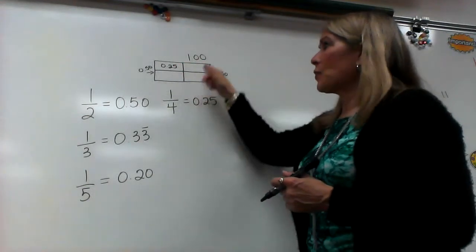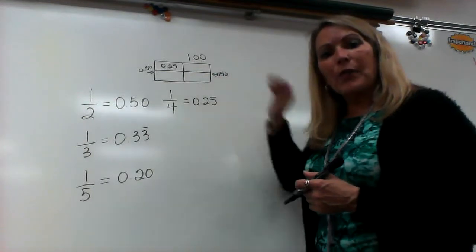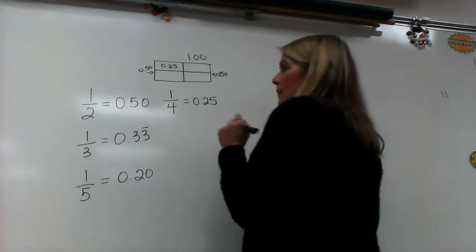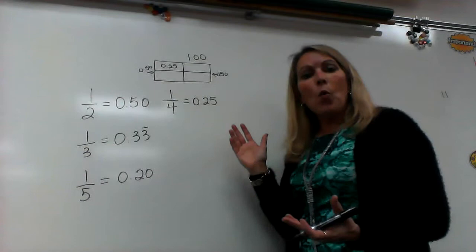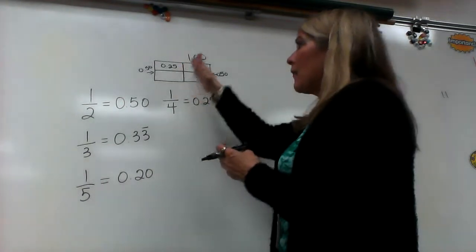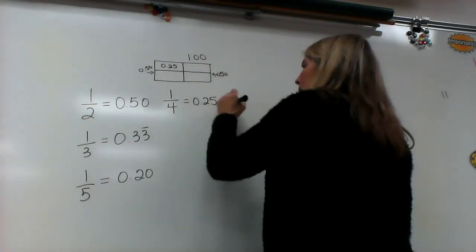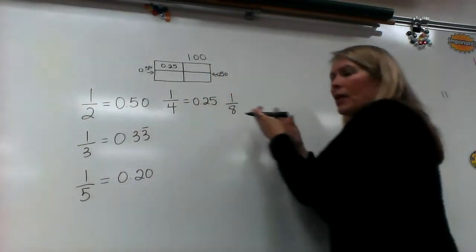Because 25, 25, 25, and 25 equals the whole hundred percent or hundred hundredths in decimals. Now, what if I did that one more time? If I took each fourth and divided it into two equal pieces, then I would have eight pieces. So, all of these are families.